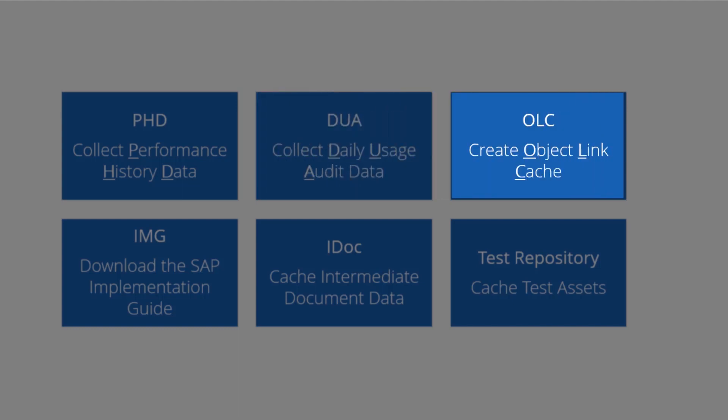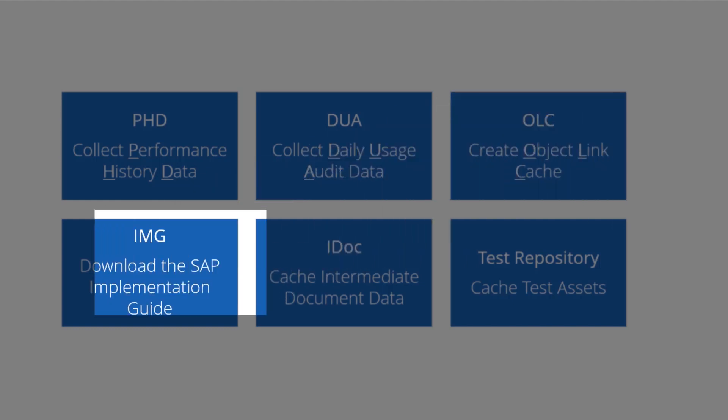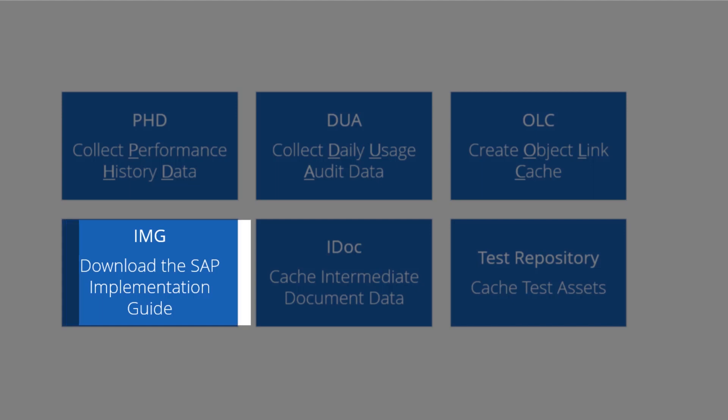Object Link Cache helps connect changing objects to used objects and should be collected in SAP development and sometimes a sandbox. Downloading the IMG hierarchy from SAP QA helps support configuration change analyses.